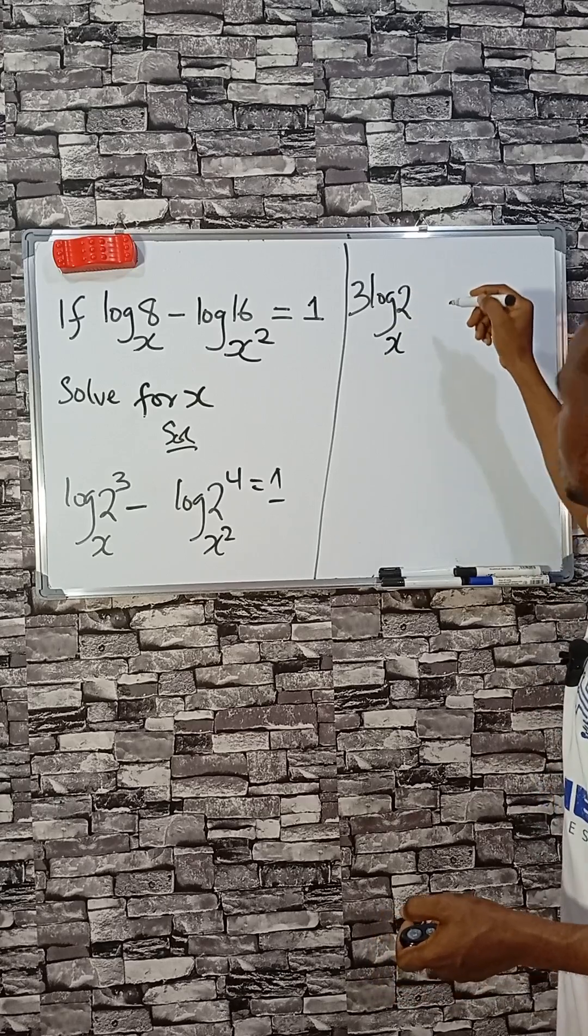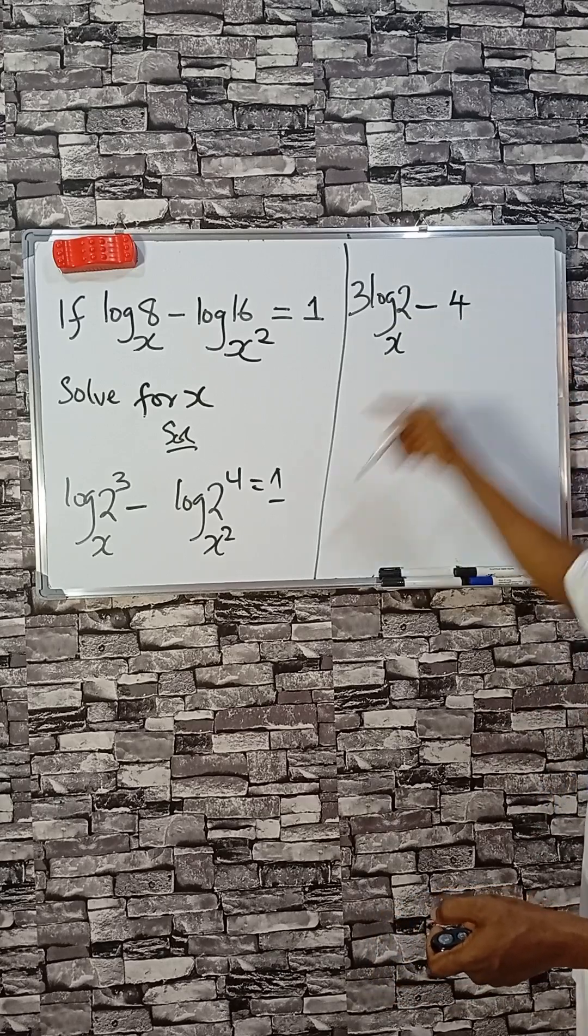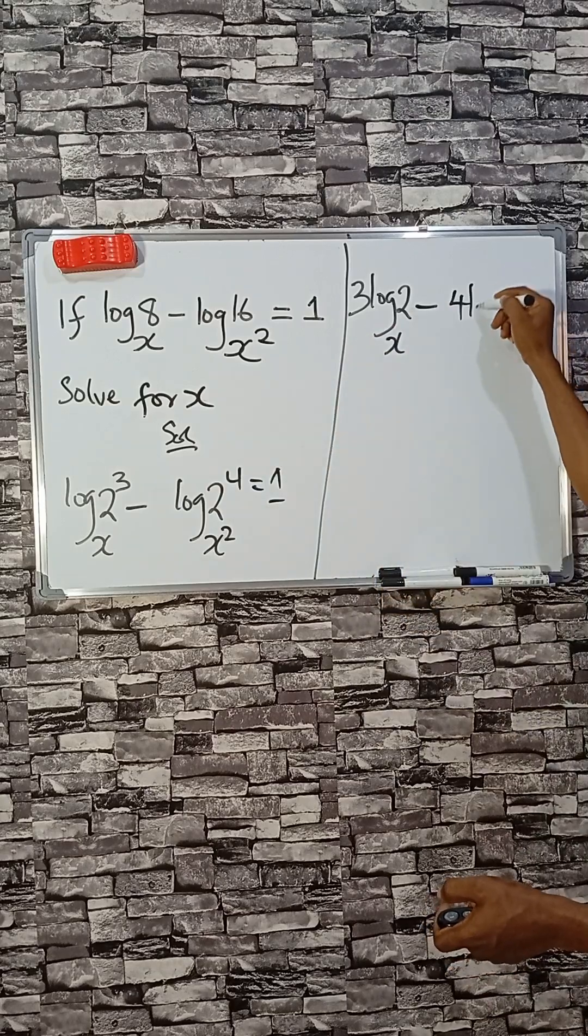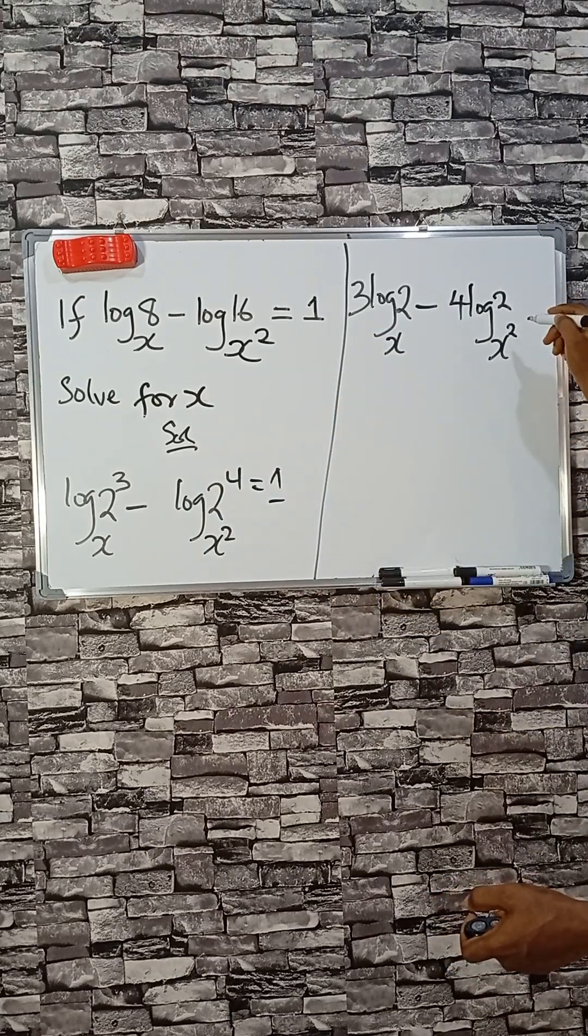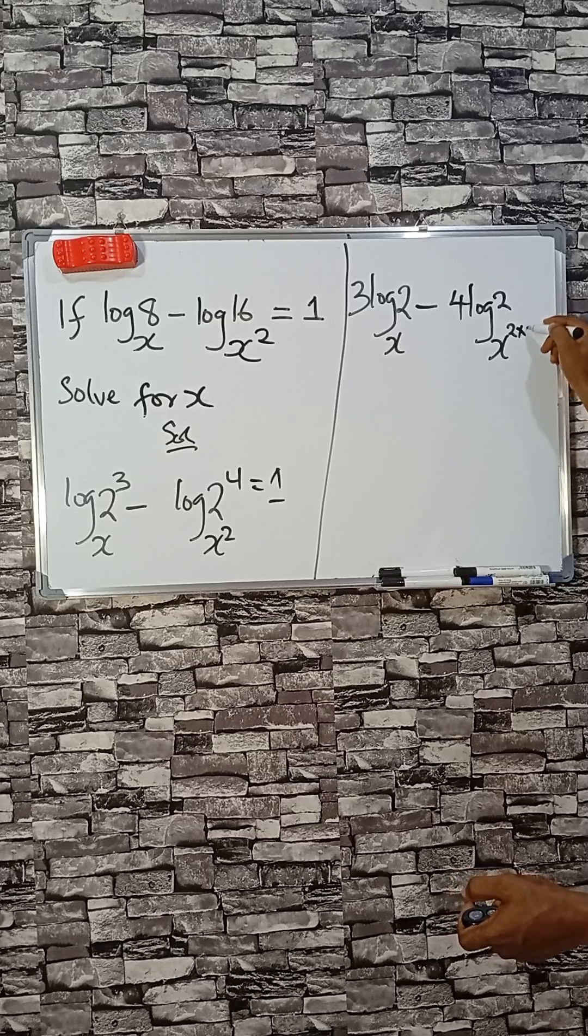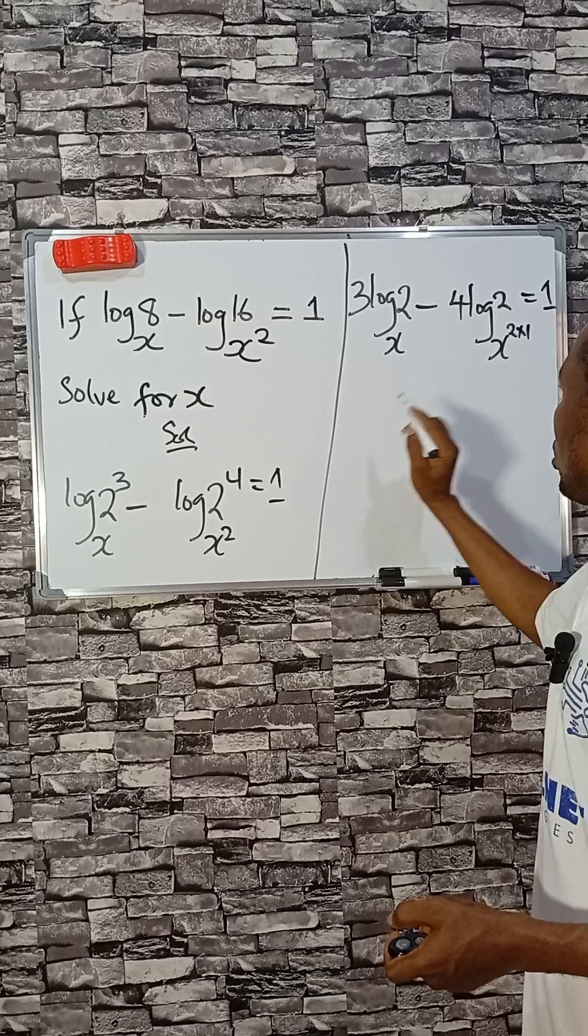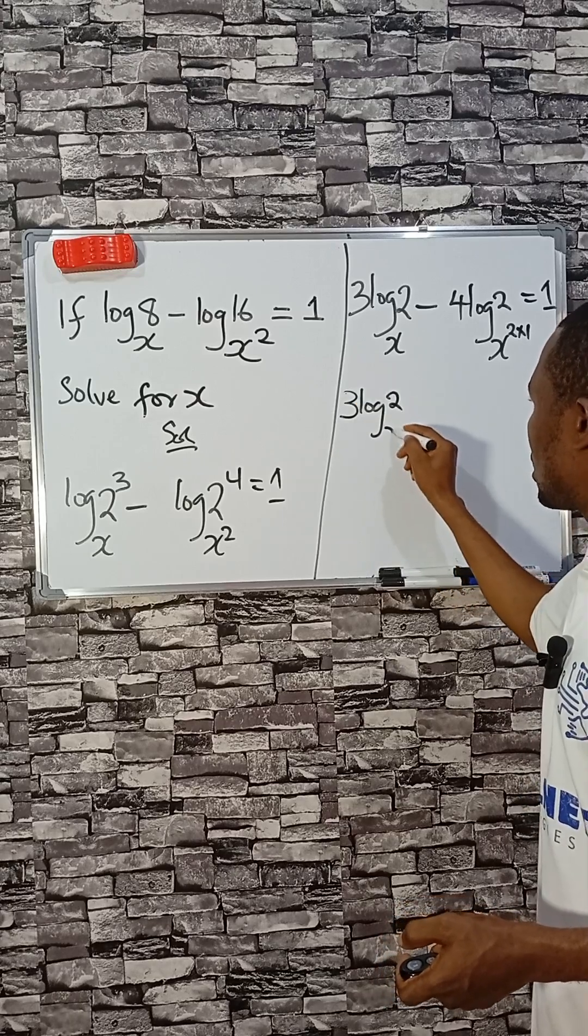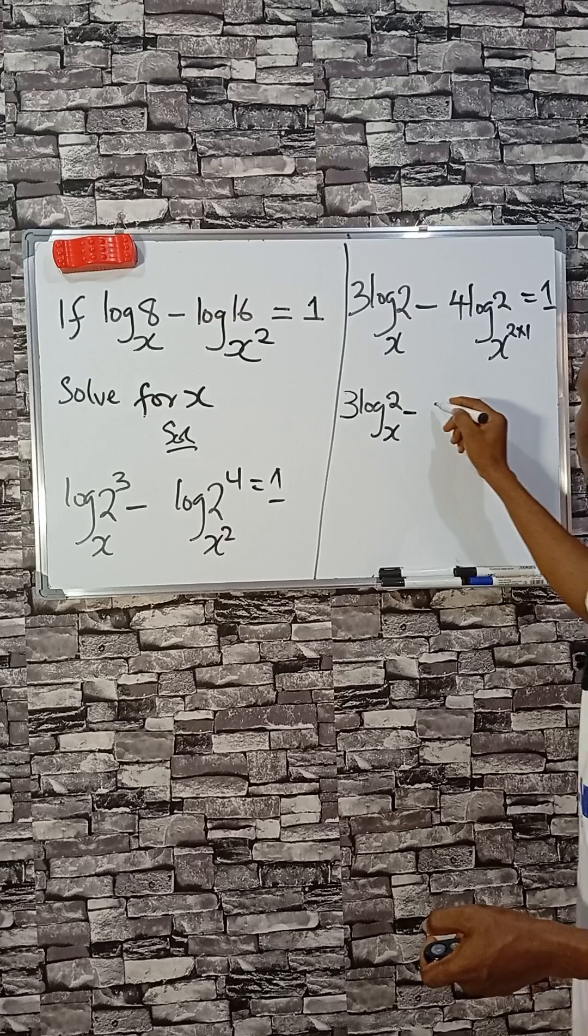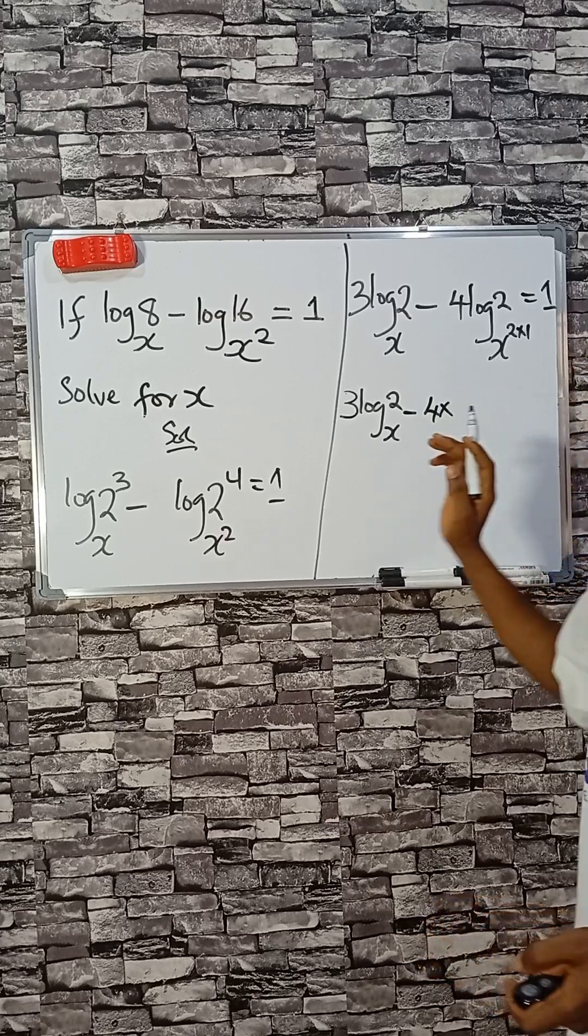When I choose to multiply by 1, don't worry, you'll see why I did that. Now we are done. 3 log 2 base X minus 4 times logarithm...